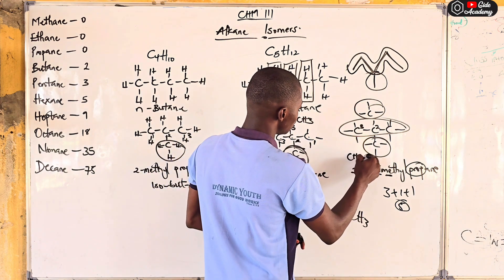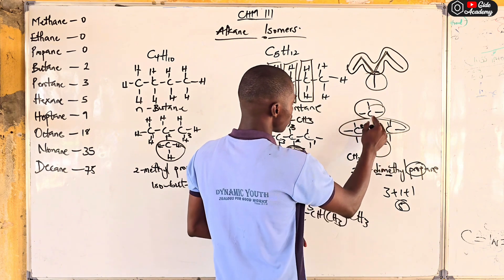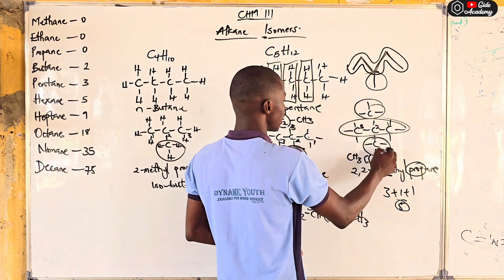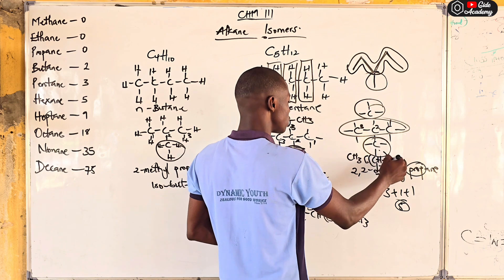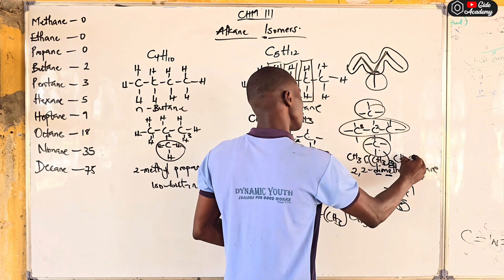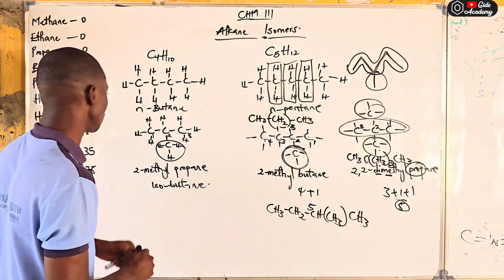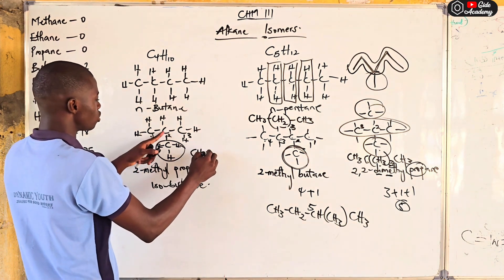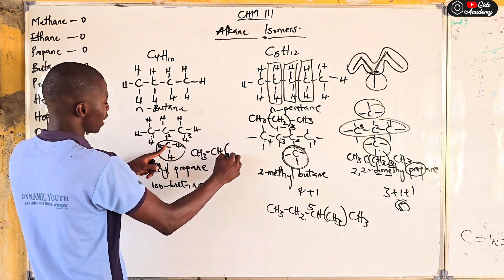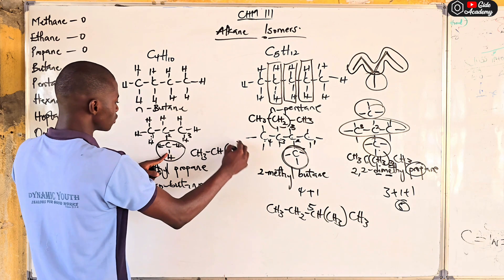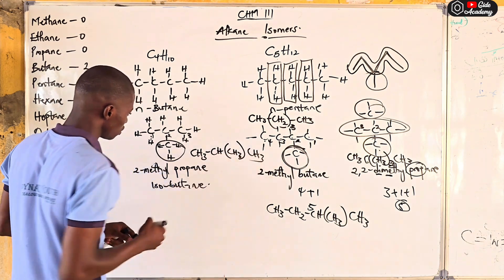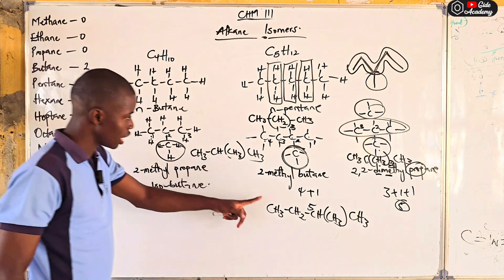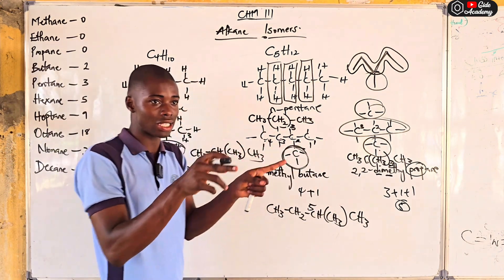For 2,2-dimethylpropane, the condensed formula is: CH3–C(CH3)2–CH3, where there is no hydrogen on the central carbon — instead it has two CH3 groups in the bracket as branches, plus a CH3 on each end. Anything in parentheses apart from CH2 indicates a branch chain.